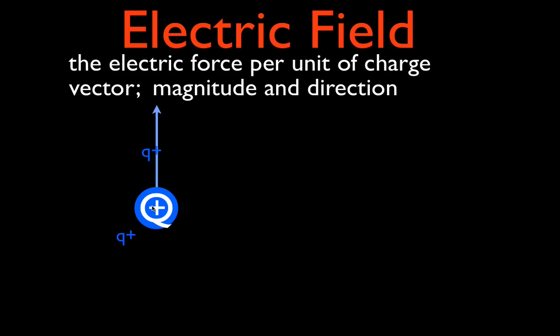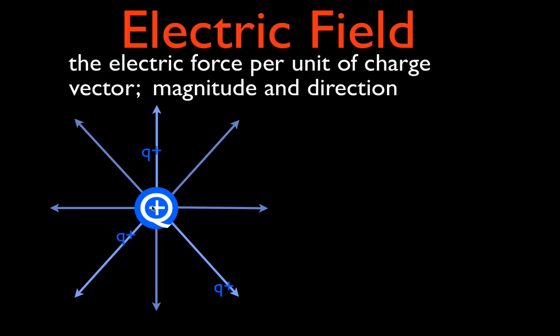Let's try another test charge over here. Once again we still have two positive charges, so the force on the test charge is still going to be away from the main charge. Even way out here, it's still positive and positive, so the direction of the electric field — the direction of the force on that test charge — is away from the main charge. If we put a test charge anywhere around that positive charge, the direction of the electric field is away from the main charge. That's how we would draw or represent graphically the electric field.